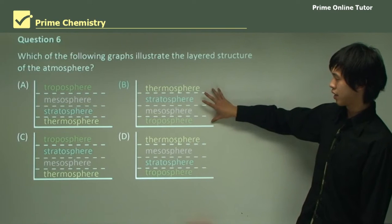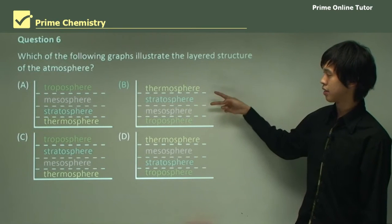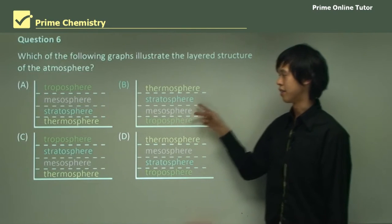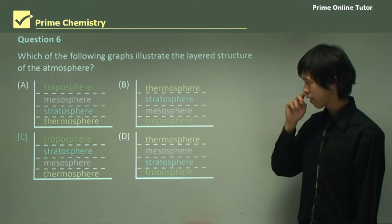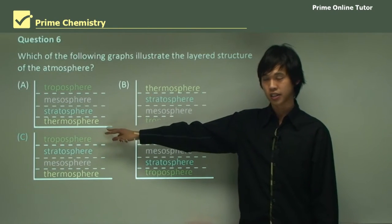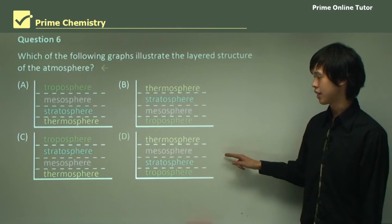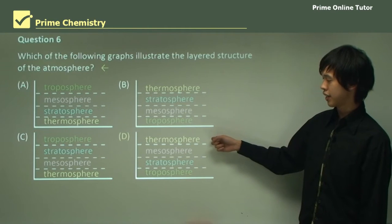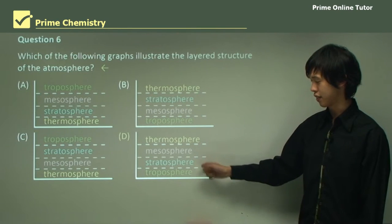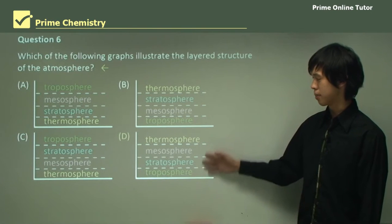Option B has the troposphere and thermosphere in the right place, but the mesosphere and stratosphere are now swapped. Option C has the troposphere at the top, which is instantly wrong. Option D is the correct answer: the thermosphere is at the top, furthest from the Earth's surface, followed by the mesosphere, then the stratosphere, and the troposphere at the bottom closest to the Earth's surface.